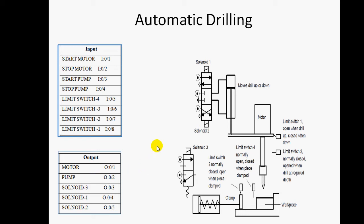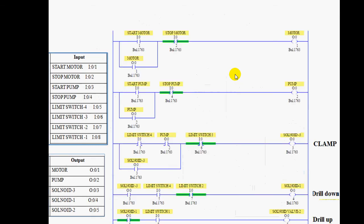The motor is used for rotating the drill bit. The pump is used for forcing air pressure into the pneumatic system. Solenoid one is used for drill moves down, solenoid two is for drill moves up, and solenoid three is for clamping purpose. These are the three solenoid valves.